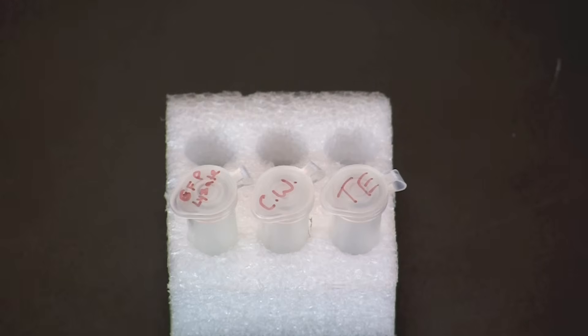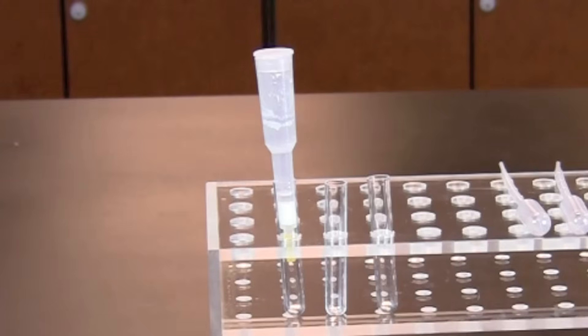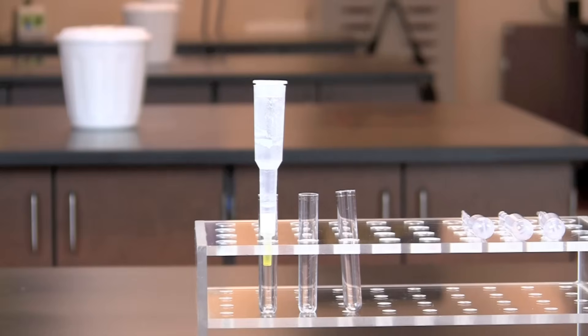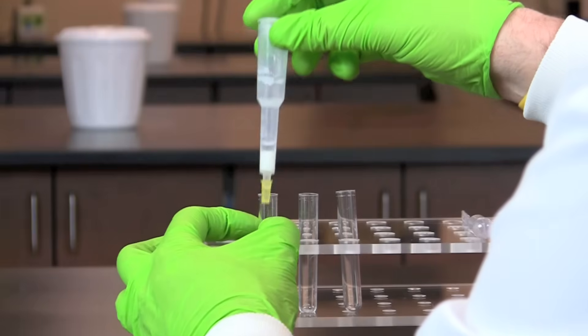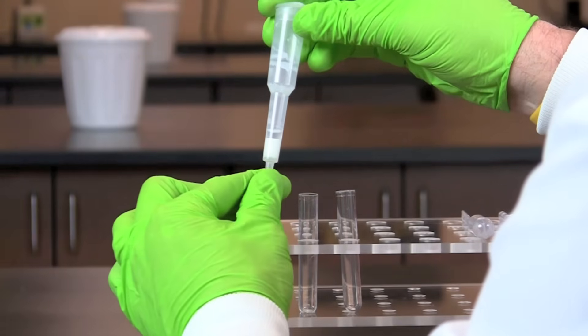For this activity you will need 250 microliters of bacterial lysate with GFP, 250 microliters of column wash buffer, and 750 microliters of TE buffer. Label three collection tubes one, two, and three, and place them on a rack with the column. To prepare the column for use, remove the caps from the top and bottom of the column.